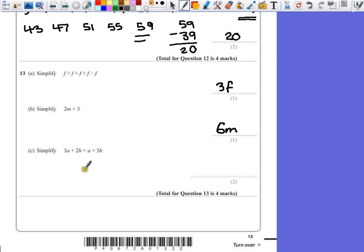Part C. Simplify. Now this one is worth 2 marks because we're mixing together 2 different letters. We're going to try and gather together families which have the same letter in them.